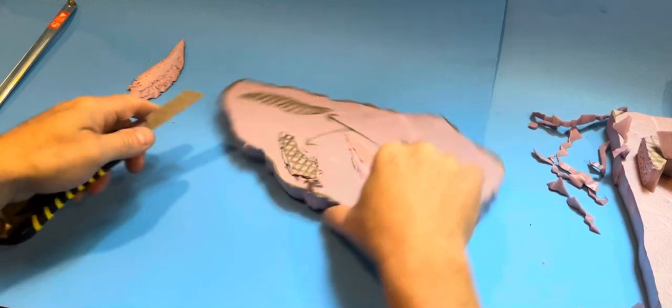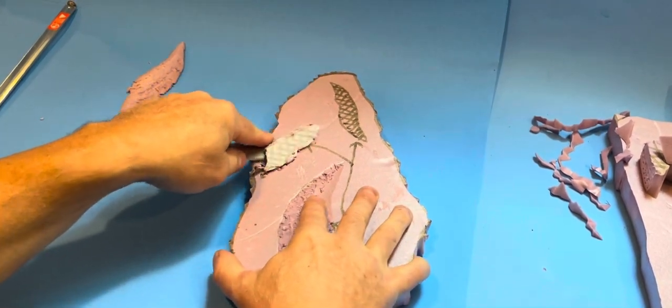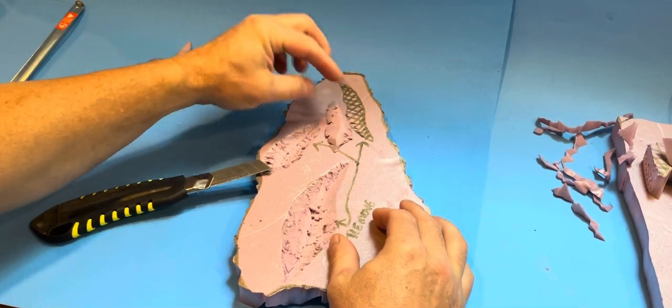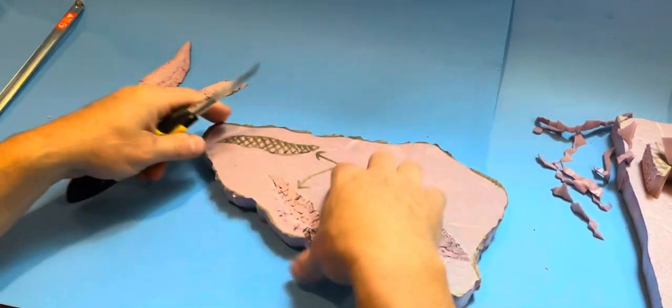And honestly, the rougher, the better because that's where you get the texture. So as you can see, you're starting to get mountains and hills and ridges and things.